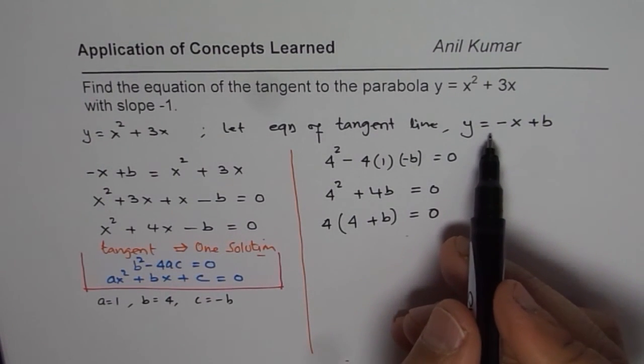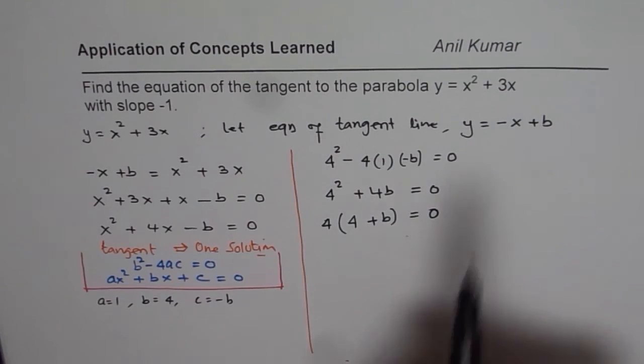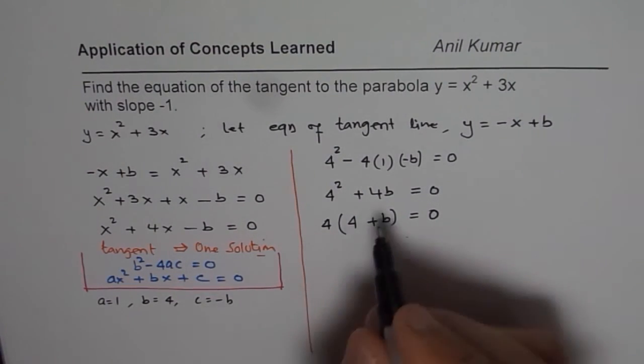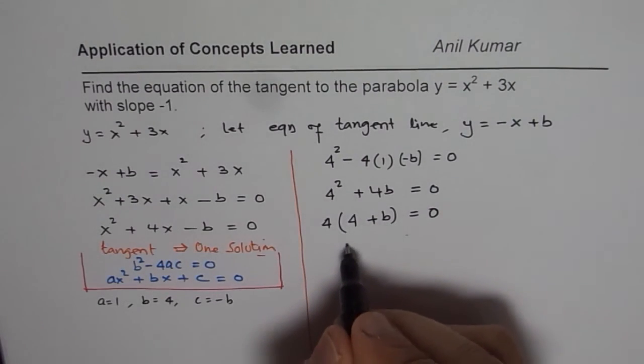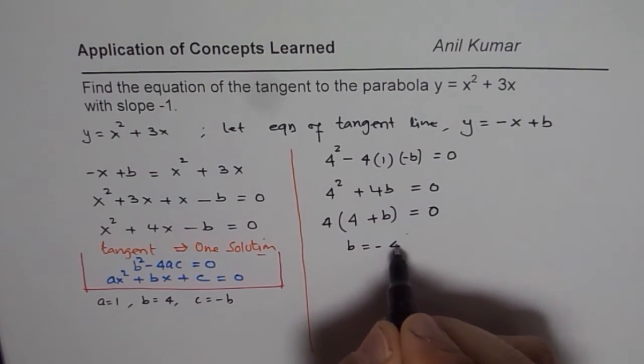Now, this is solving linear systems with quadratic systems. So, these are so many principles which we are combining together. Now, when will this be 0? This will be 0 for b equals to minus 4, right?